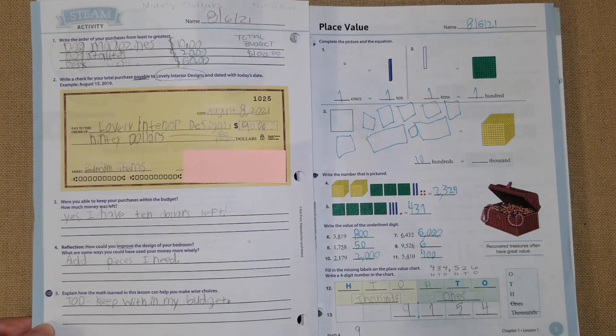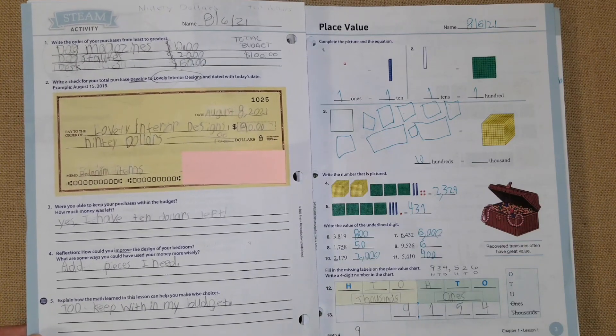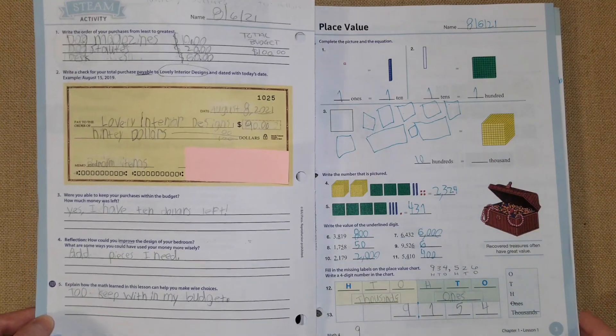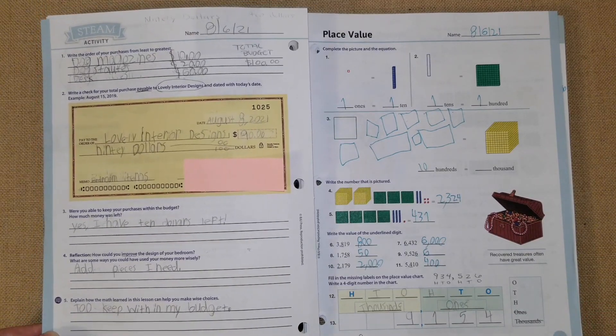This is the STEAM activity. It said write the order of your purchases from least to greatest and do the check. They had a few questions about how to keep within a budget and all that stuff. It was a really good way to explain to her how to keep within a certain budget.